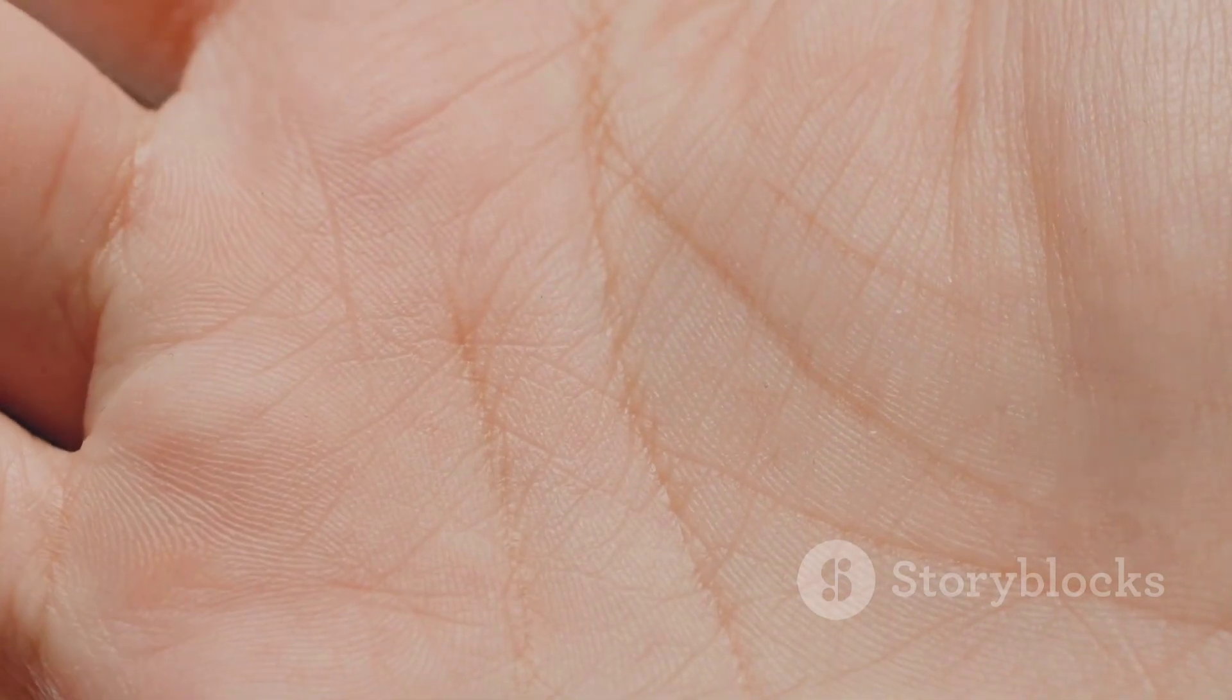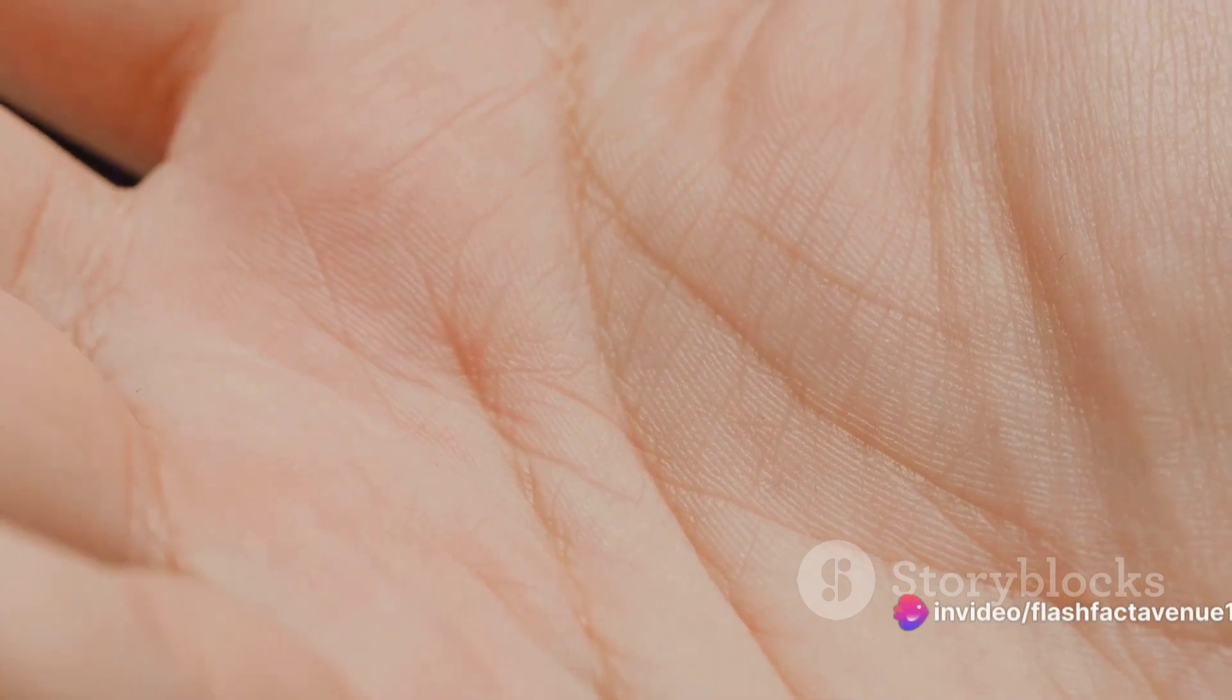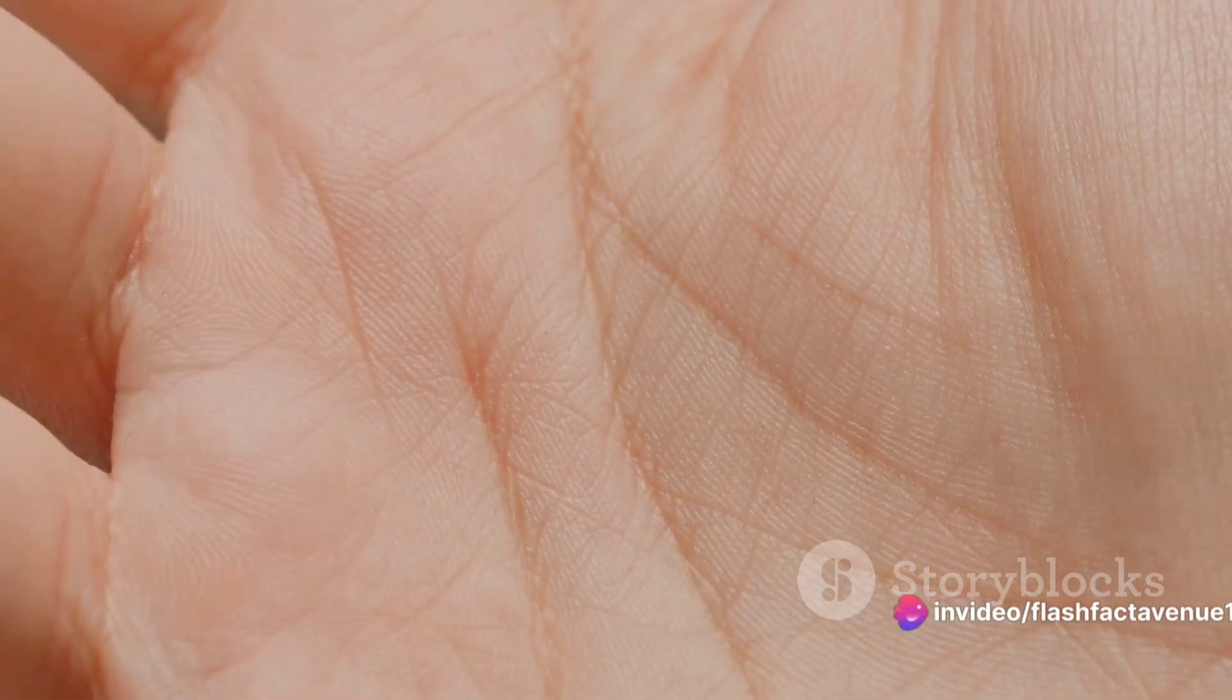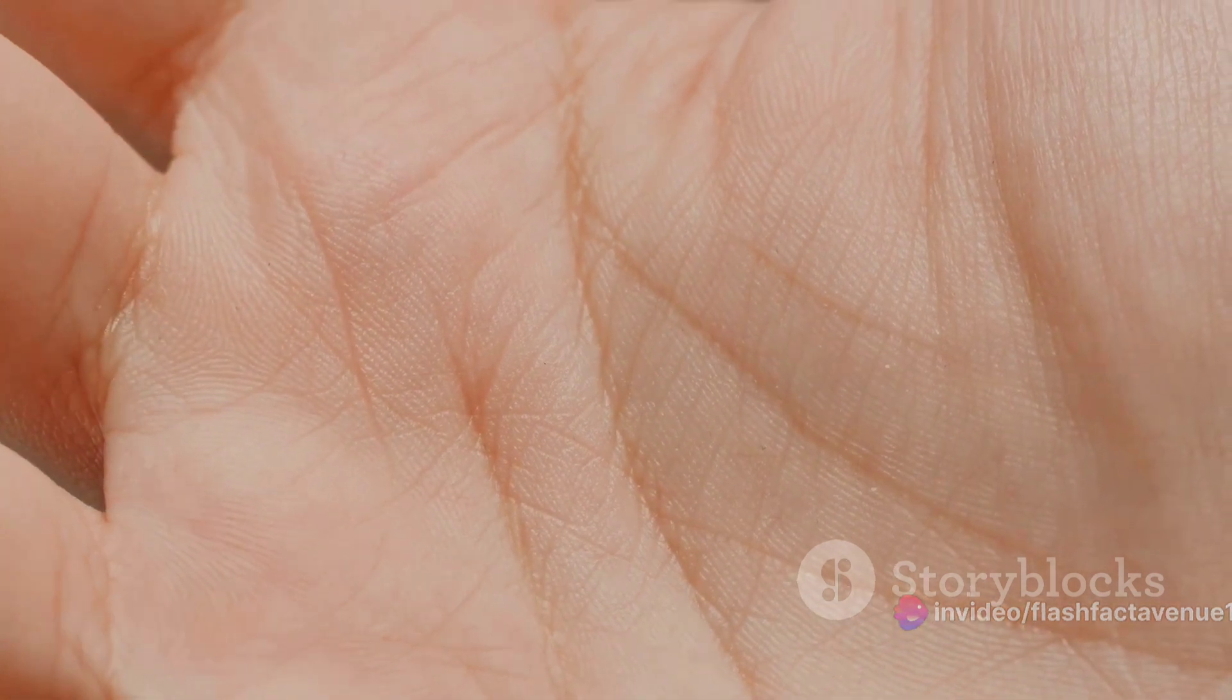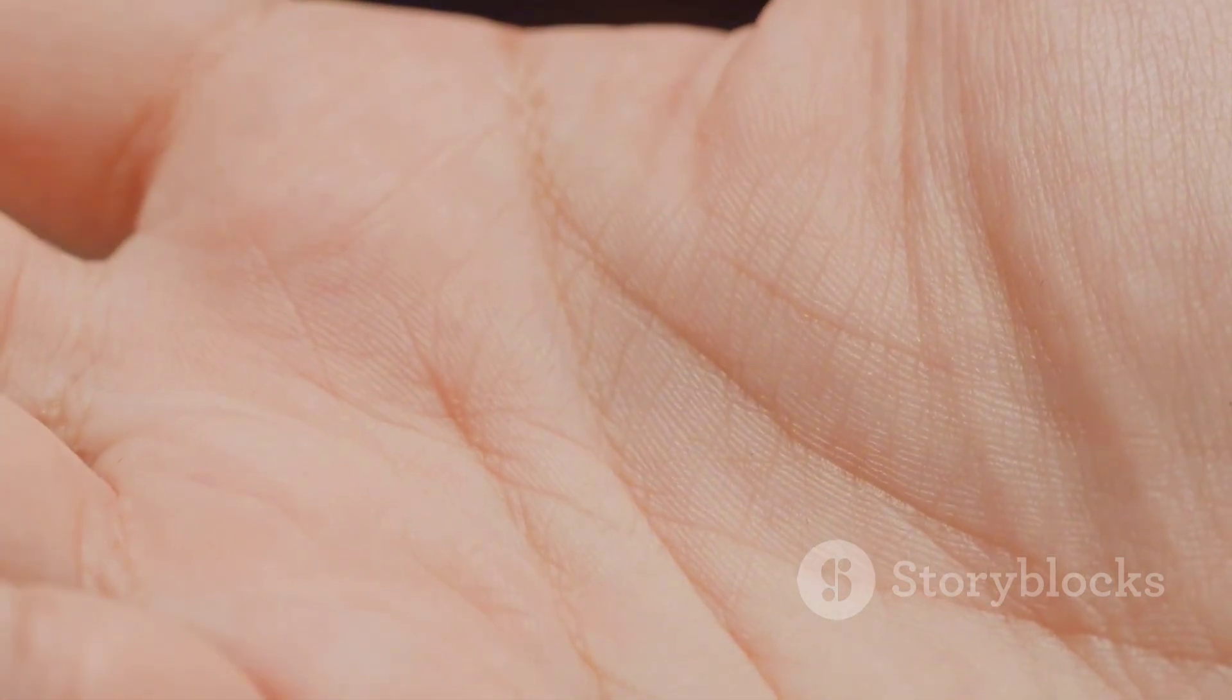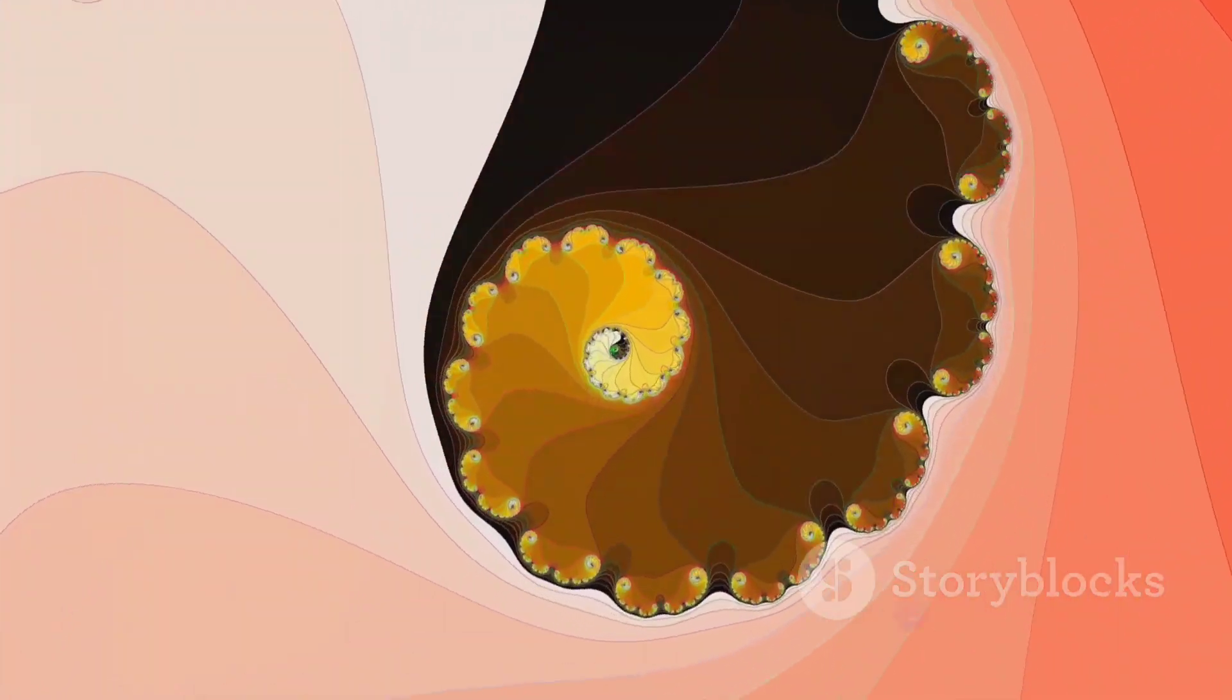For instance, did you know that the golden ratio can be found in the proportions of the human body? From the length of our fingers to the distance between our eyes, this magical number is embedded in our very being. And it's not just us humans, the golden ratio can be spotted everywhere in nature too.